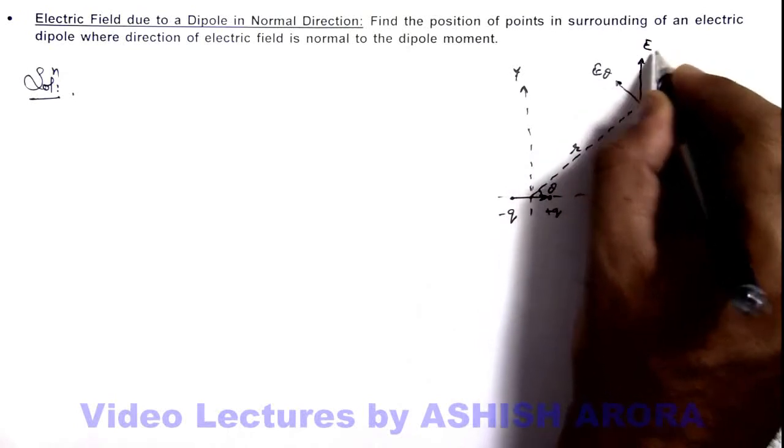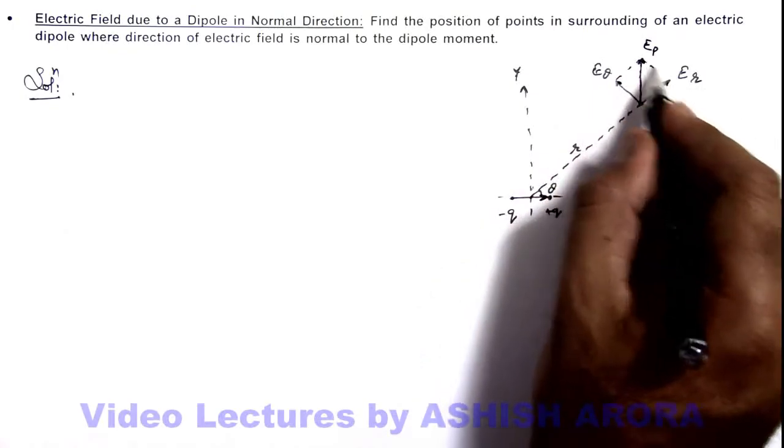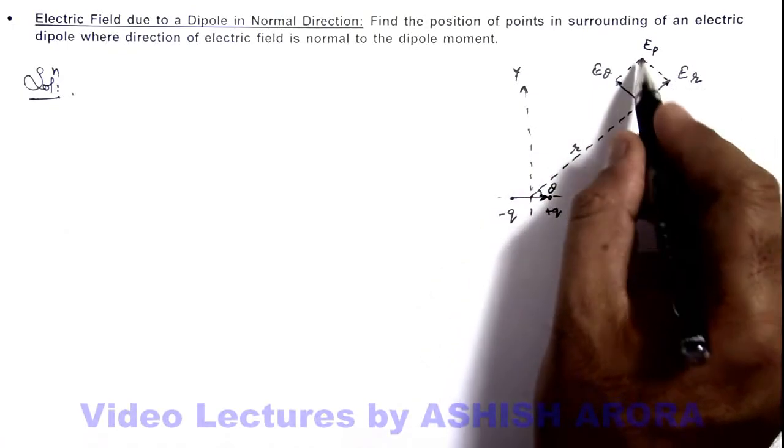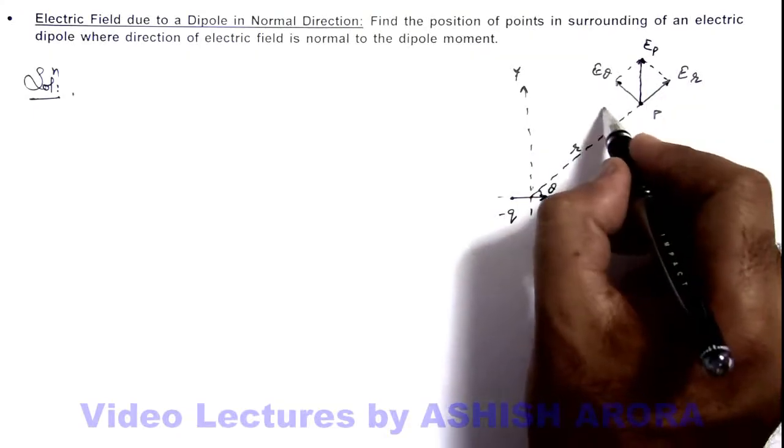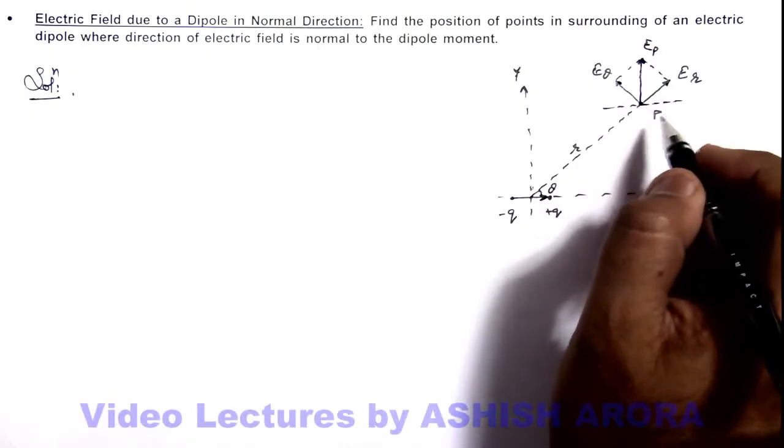So if E at point P is only in y-direction, that means the vector sum of these two dipole fields will be only along y-direction, so horizontal components of these two dipole electric fields should cancel each other.